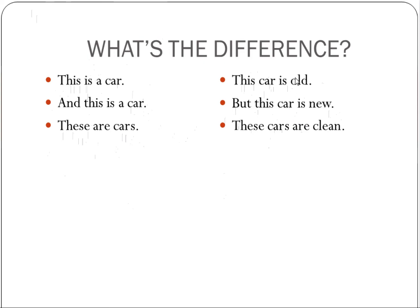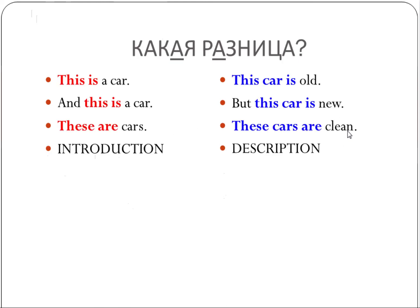When you look at the sentences on the right we're not finished after we say car. The purpose of these sentences is to give more information. This car is old. The focus is here. That's the new piece of information that I'm adding. But this car is new. So this is my focus. That's what I want to communicate here. These cars are clean. So I'm describing in some way.